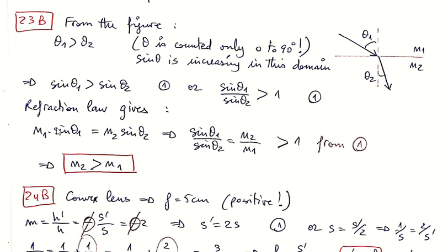Refraction law gives - Snell's law tells us that N1 sine theta 1 equals N2 sine theta 2. I will divide by sine theta 2, and also divide by N1. So if we divide by sine theta 2, this will disappear and appear under this, giving sine theta 1 divided by sine theta 2.